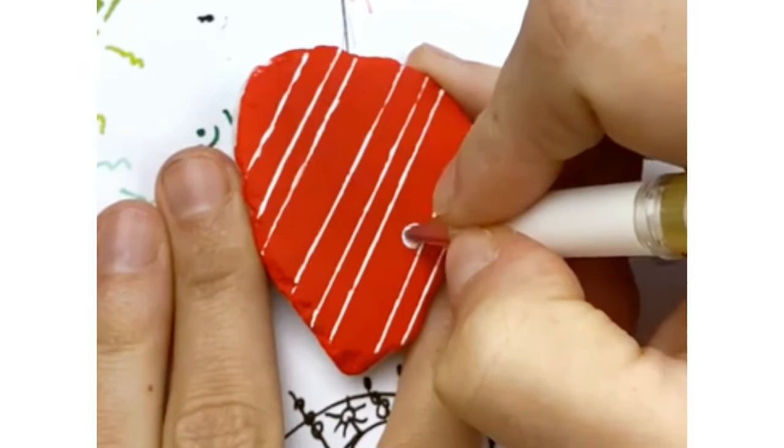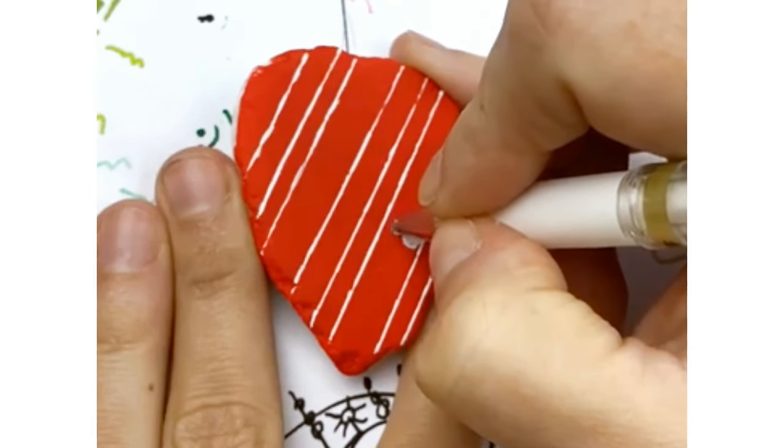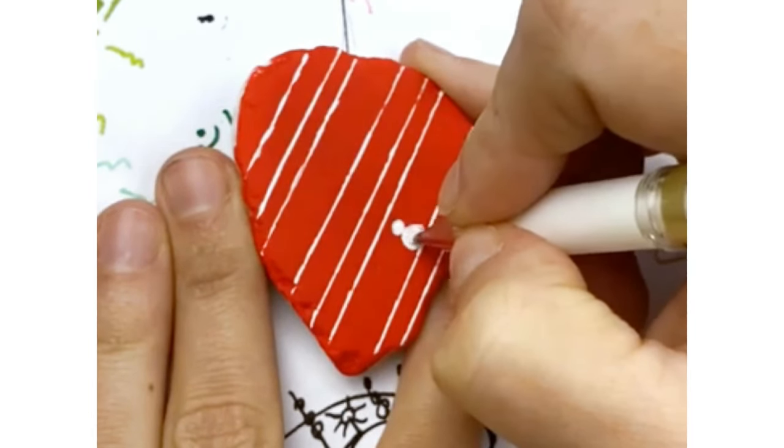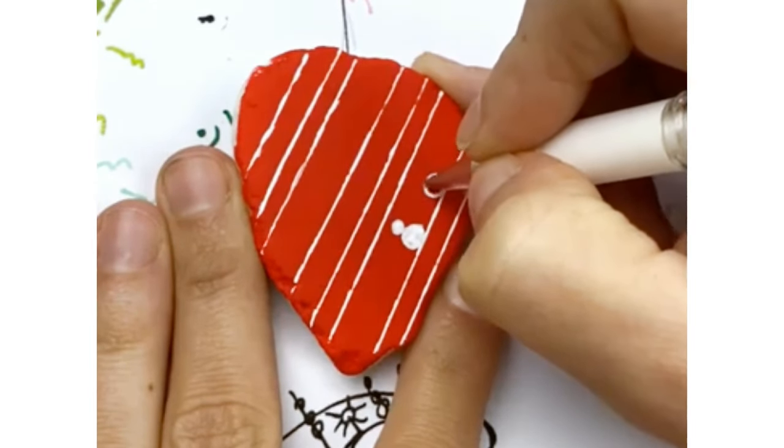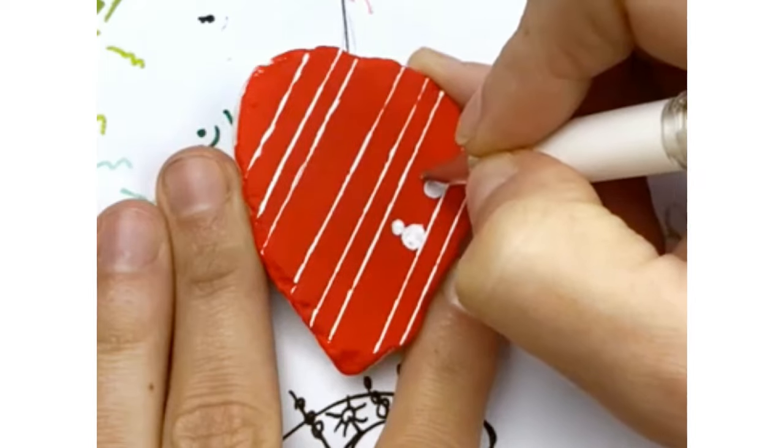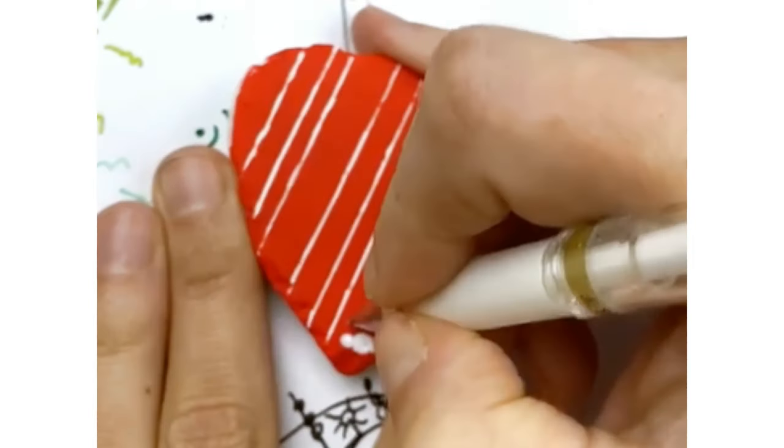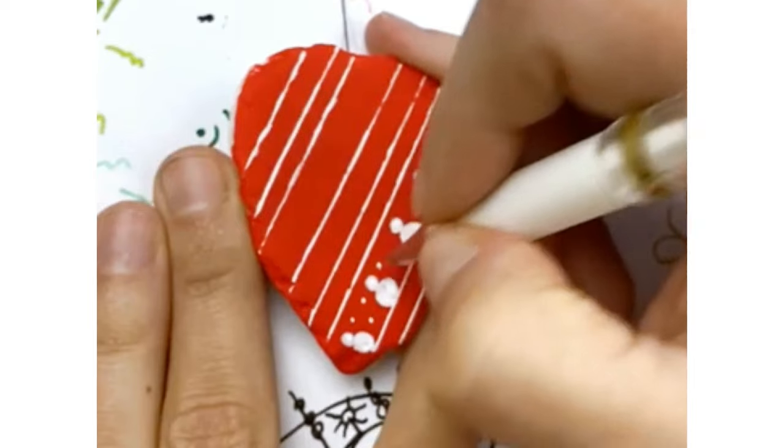So for this one we're just going to do two circles. Obviously one's going to be a little bit bigger than the other one. We're going to space them out a little bit because we're going to come back and add a couple little snow flurries in between each of our snowmen. I just think the little dots in between each of the snowmen pull the whole design together.